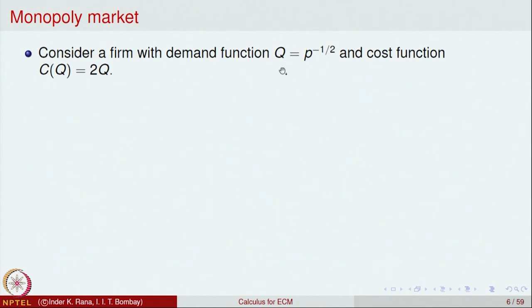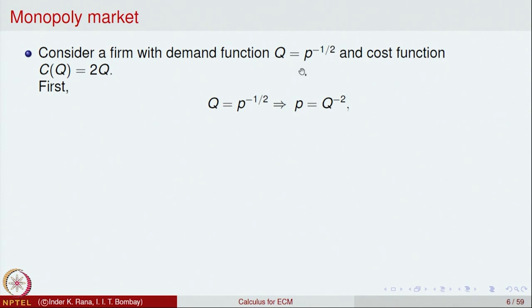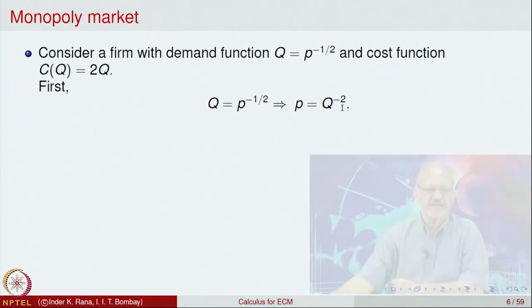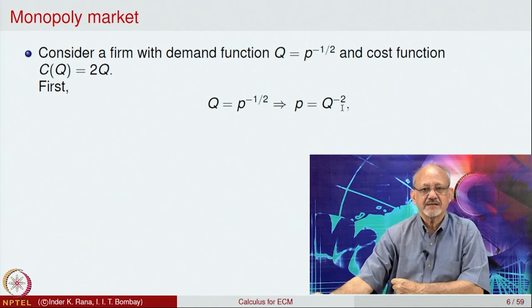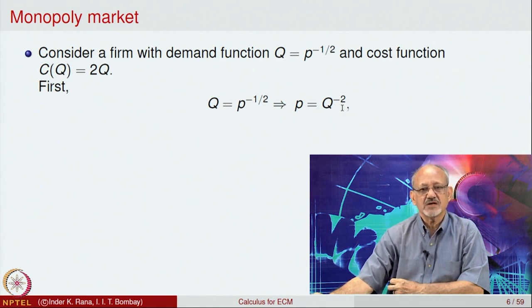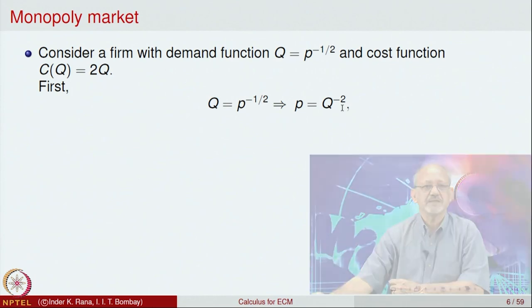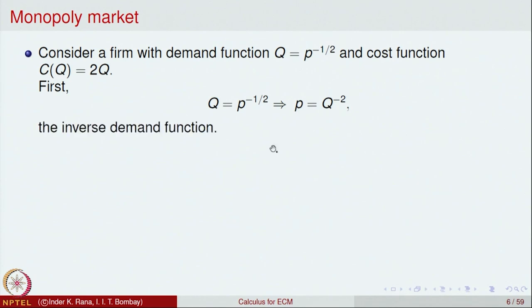Let us consider one more example: a firm with demand function Q = P^(−1/2) and cost function C(Q) = 2Q. From Q = P^(−1/2) we get P^(1/2) = 1/Q, and squaring gives P = Q^(−2). So as Q decreases, P increases. This is called the inverse demand function.